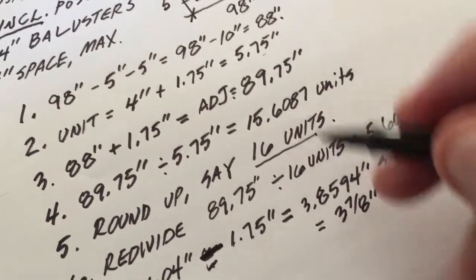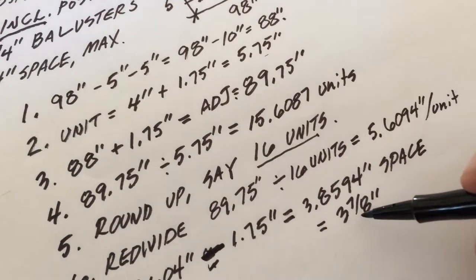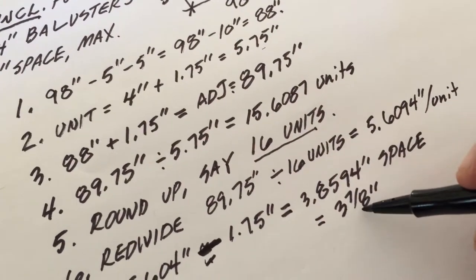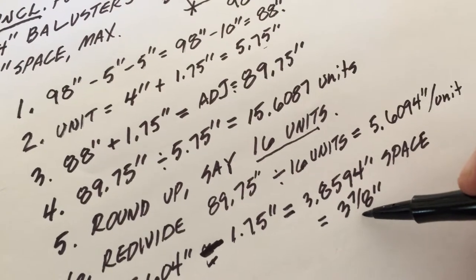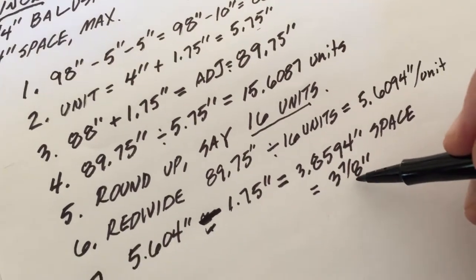So our target that we started with was four inches. We did this math to find out that won't work - we'll end up with too big a gap - and we're going to go with three and seven eighths inches as a space.